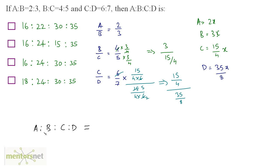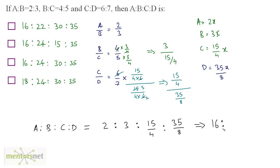Now you can find out the ratio of a, b, c and d all together. Well, a is to b is to c is to d is 2 is to 3 is to 15 by 4 is to 35 by 8. We can multiply each term with the LCM of 4 and 8, which is 8. So 8 times 2 is 16, 8 times 3 is 24, 15 by 4 times 8 gives 15 times 2 which is 30, and we have 35. So our answer is 16 is to 24 is to 30 is to 35, which is option C.